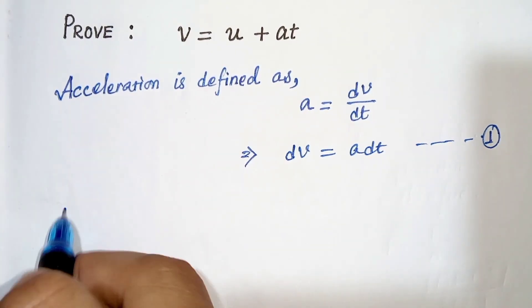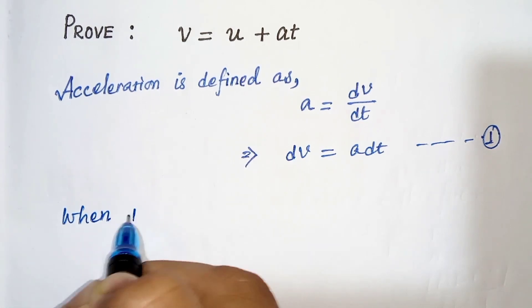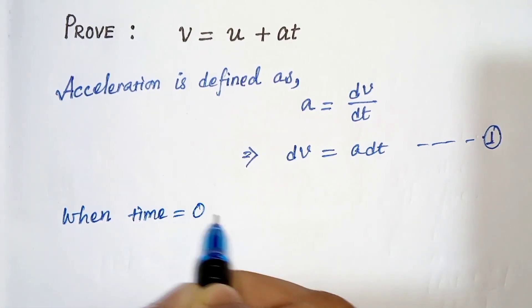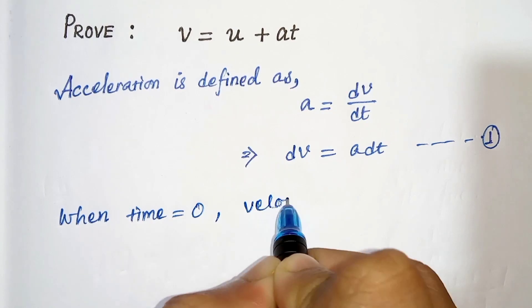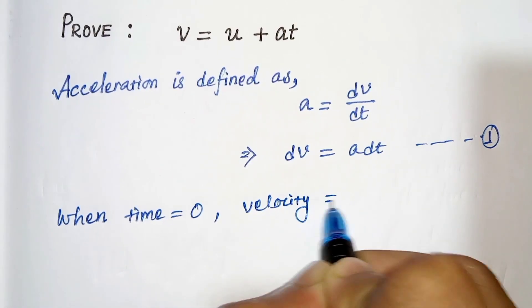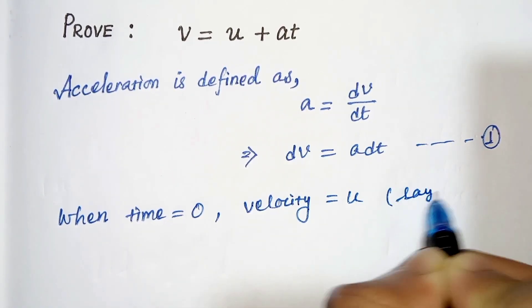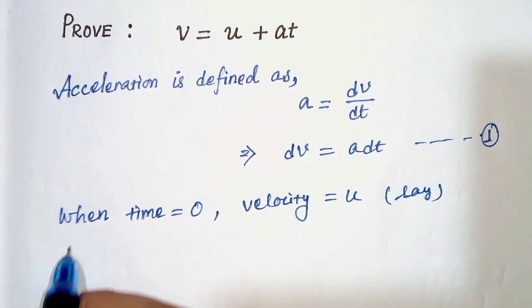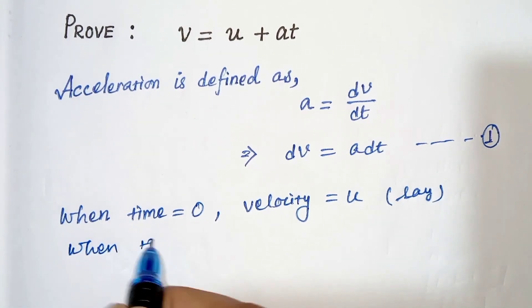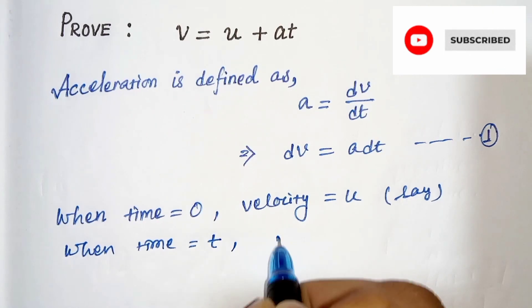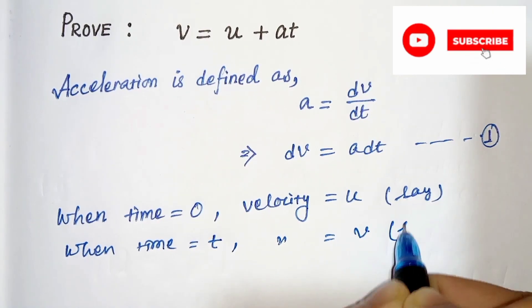Now, when time equals 0, let the velocity of the object be u, and when time equals t, let the velocity be v.